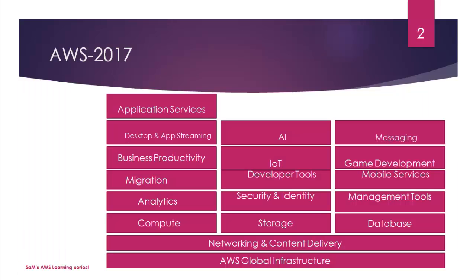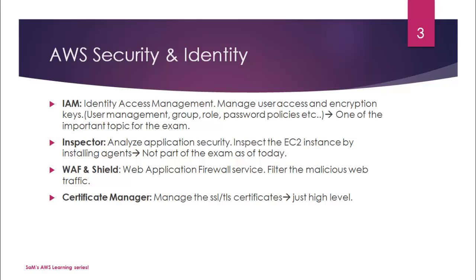These are the key components of AWS, the key service offerings. The very first offering from AWS under Security Identity and Compliance is IAM — Identity Access Management. As the name says, it will help you to manage user access and encryption keys. You can do things like user management and control groups.